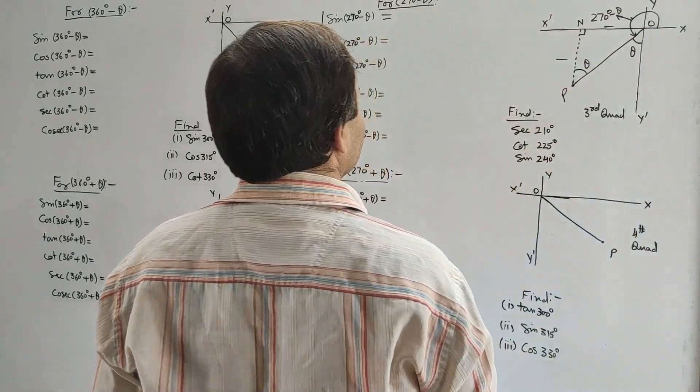Sin(270° + θ): perpendicular is minus PN upon hypotenuse OP. For angle θ, PN is base and OP is hypotenuse, which is positive for an acute angle. So sin(270° + θ) = minus cos θ. For cos(270° + θ): base ON is positive and hypotenuse OP is positive, giving ON upon OP. For angle θ, ON is perpendicular, so this equals sin θ. Hence cos(270° + θ) = positive sin θ. For tan(270° + θ): perpendicular is minus PN, base is plus ON. For angle θ, PN is base and ON is perpendicular, so base upon perpendicular gives cot θ. Therefore tan(270° + θ) = minus cot θ.